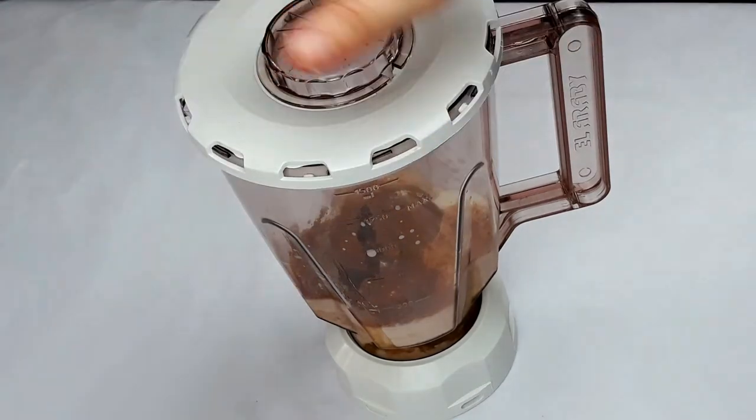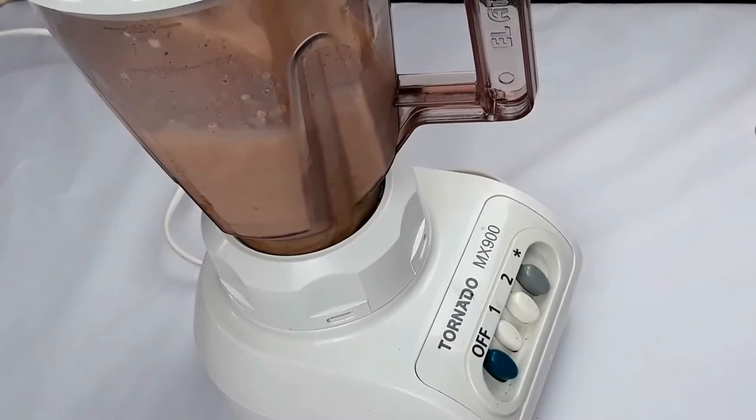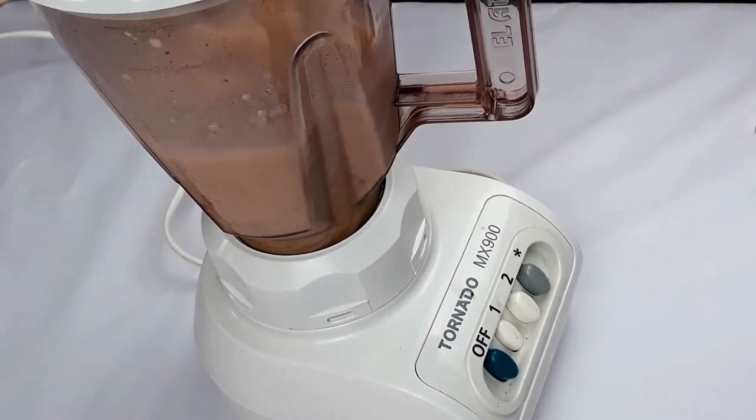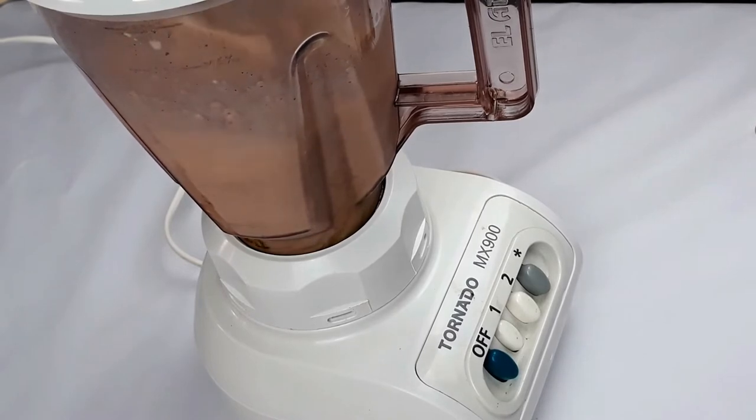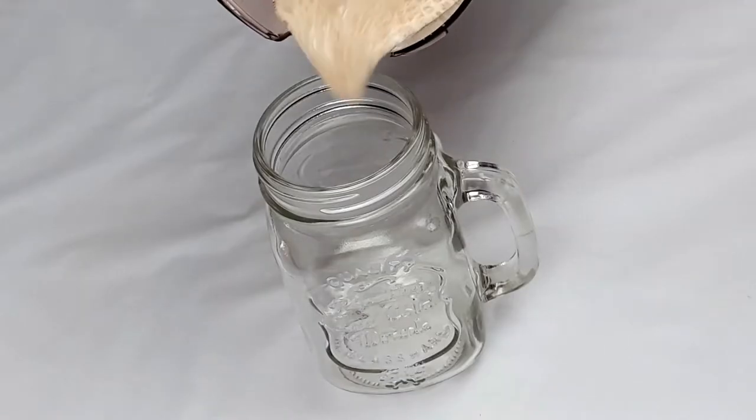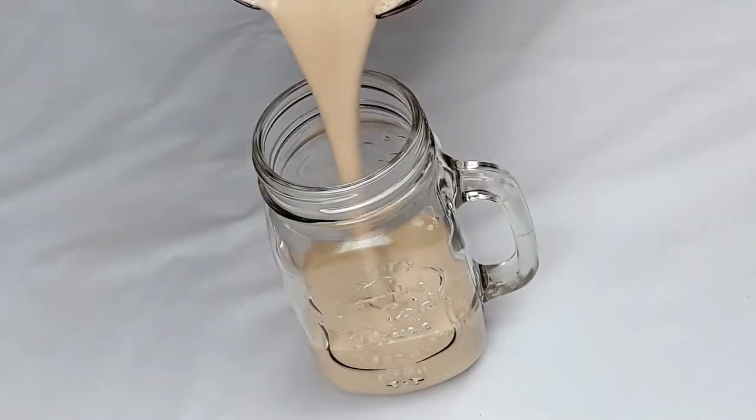Blend them using a food blender. This type of smoothie has a light texture and is drunk using a juice straw. This quantity is enough to prepare 1 cup.